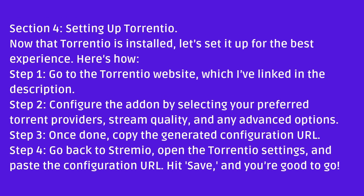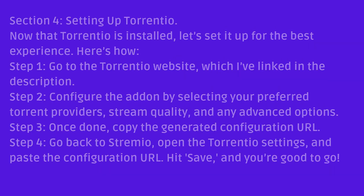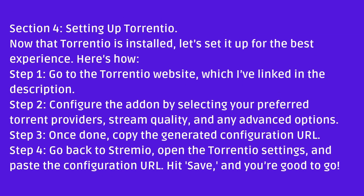Section 4: Setting up Torrentio. Now that Torrentio is installed, let's set it up for the best experience. Step 1: Go to the Torrentio website, which I've linked in the description. Step 2: Configure the add-on by selecting your preferred torrent providers, stream quality, and any advanced options. Step 3: Once done, copy the generated configuration URL. Step 4: Go back to Stremio, open the Torrentio settings, and paste the configuration URL. Hit Save, and you're good to go.